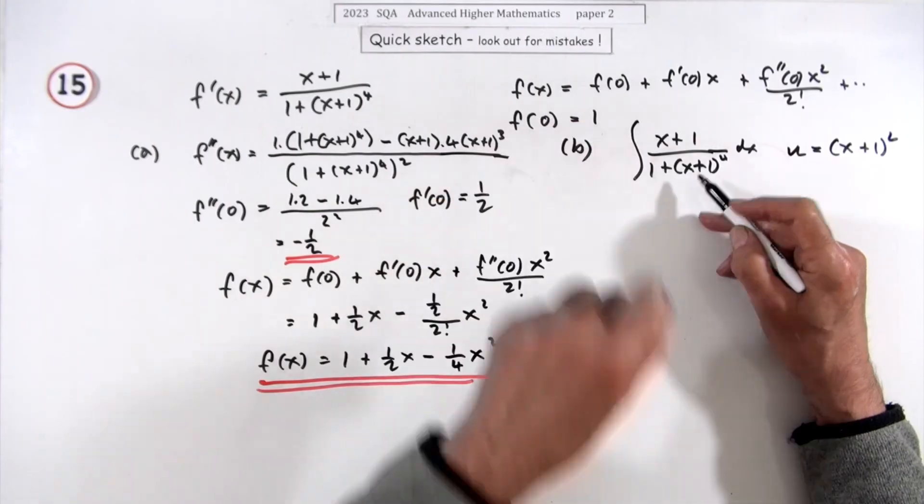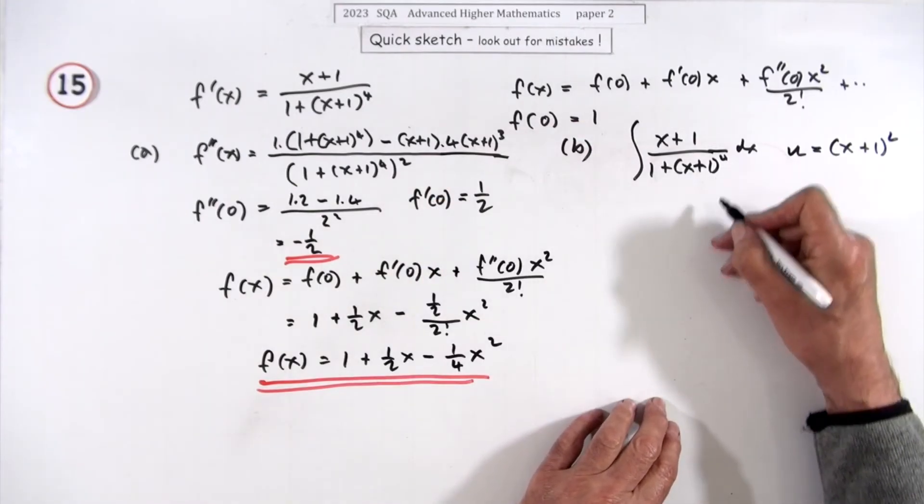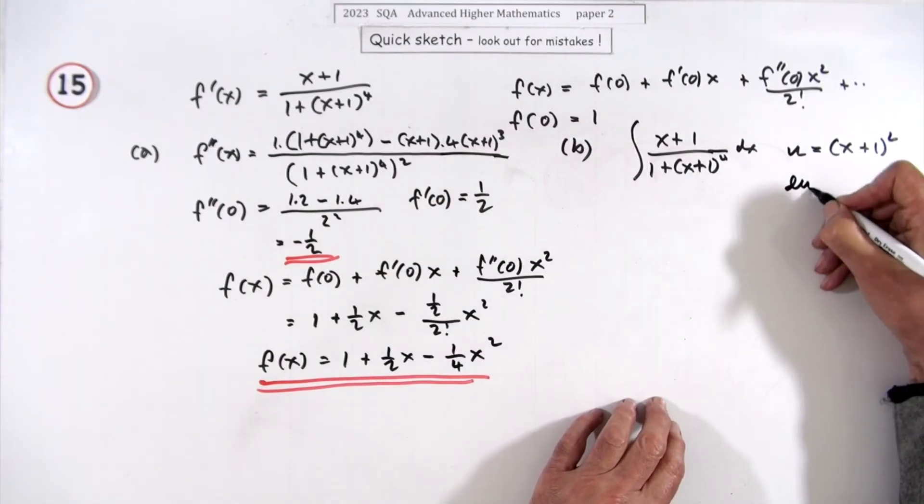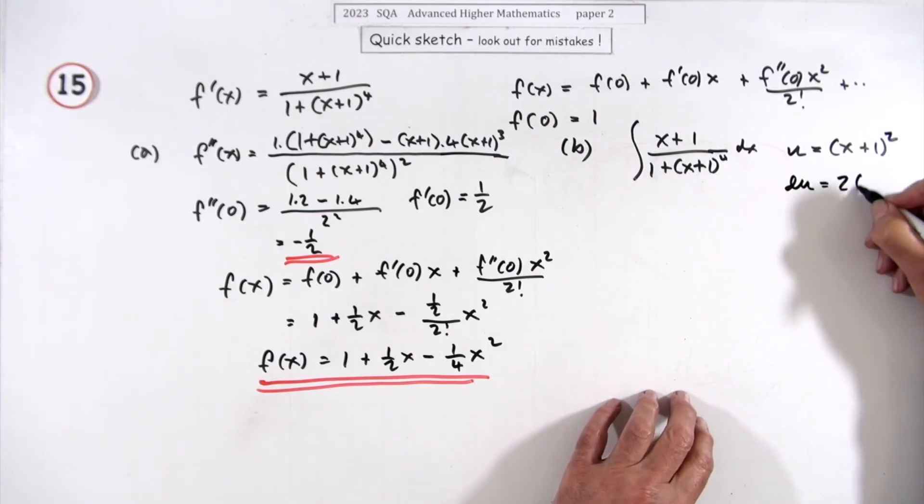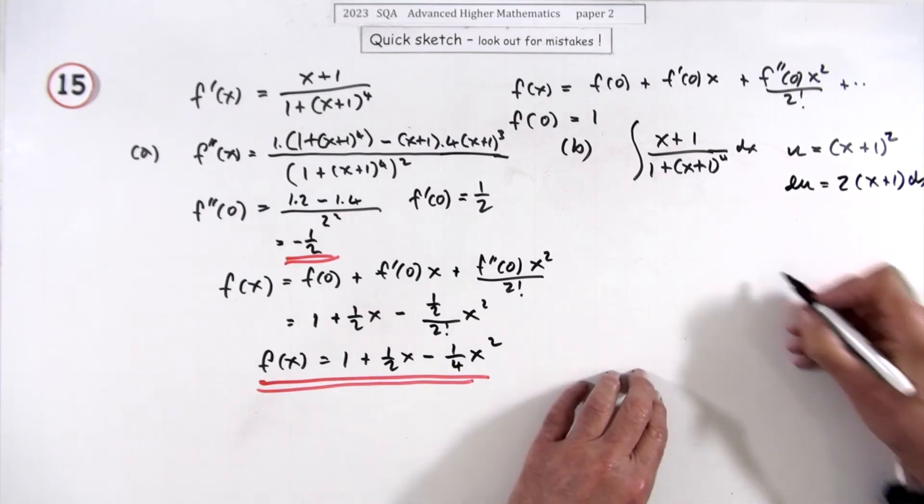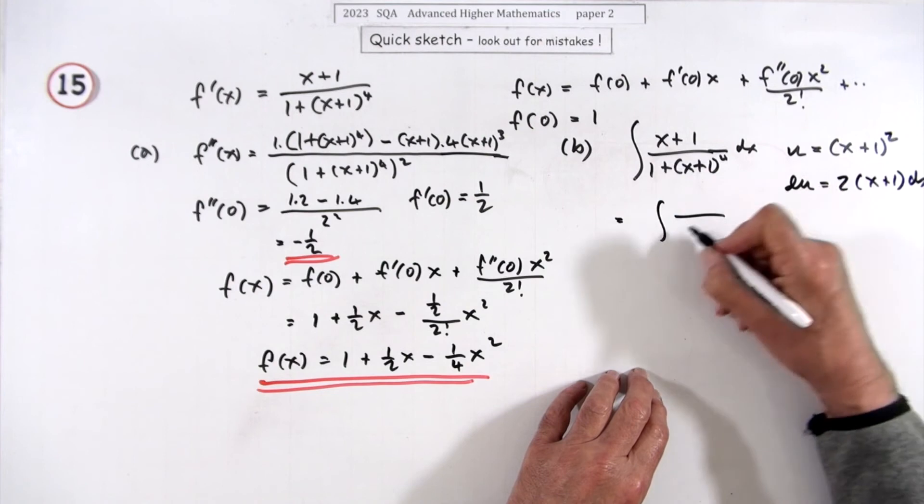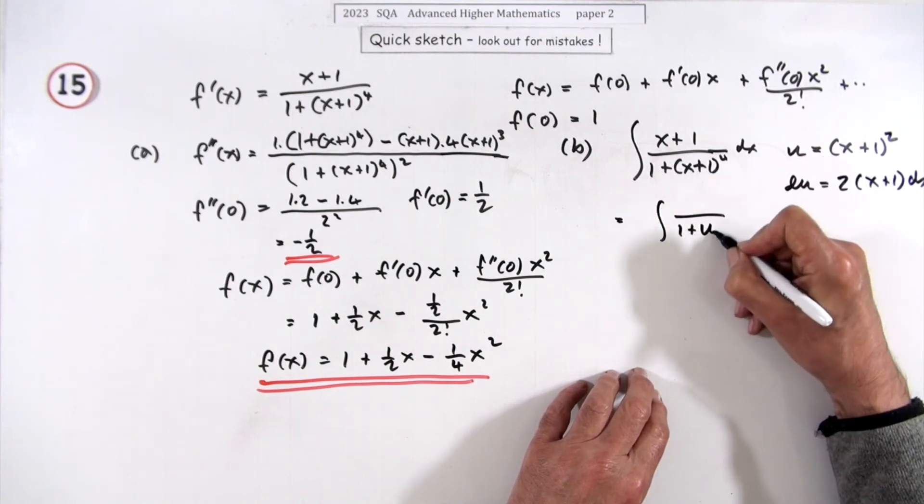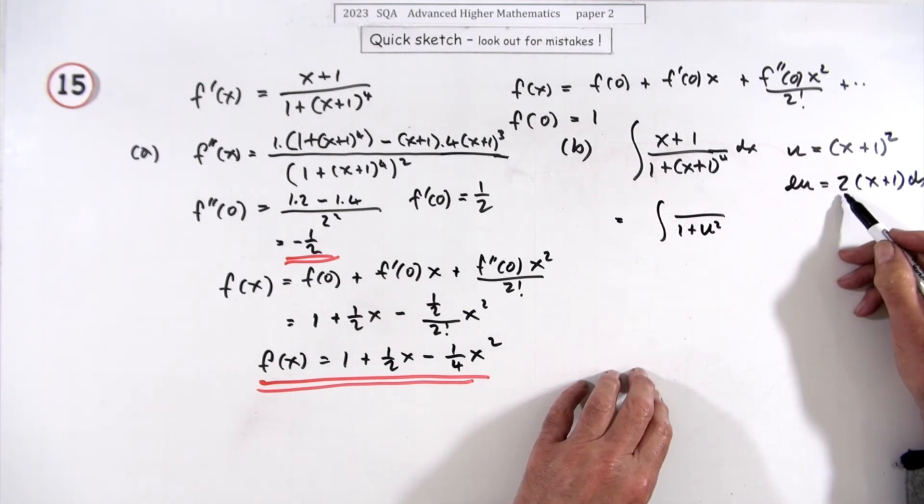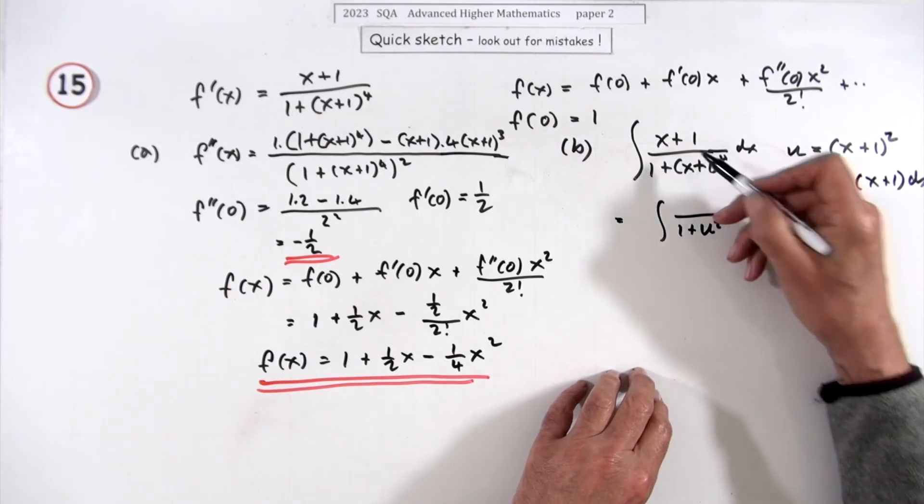So carrying that substitution, du will be, if that's x², 2(x+1)dx. So this is going to turn into the integral of, and that'll be 1 plus that's power four, that'll be u². Now I needed two of them but I've only got the one, so it'll be a half, half of this.